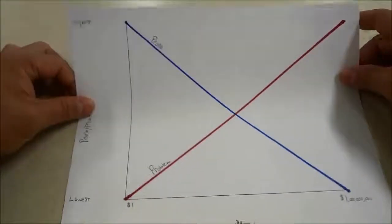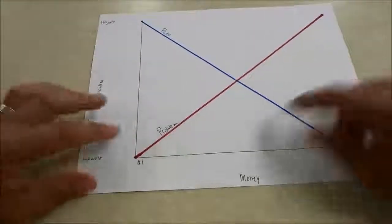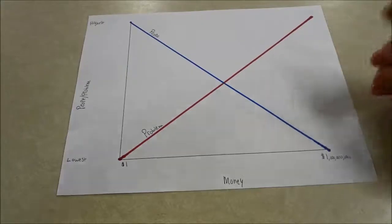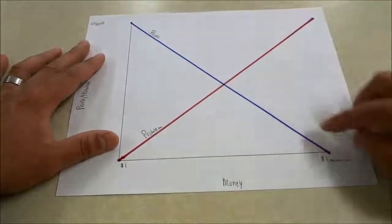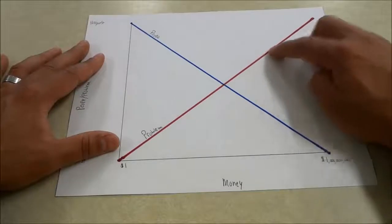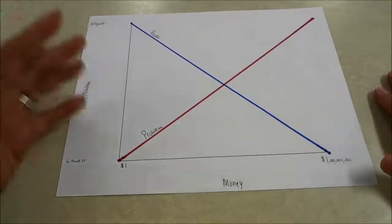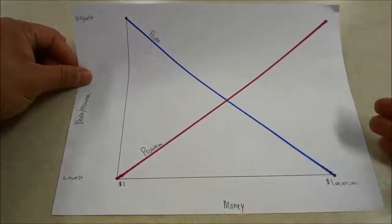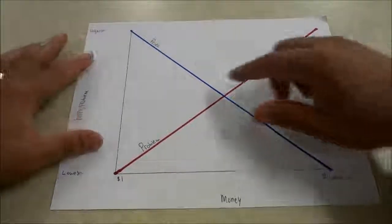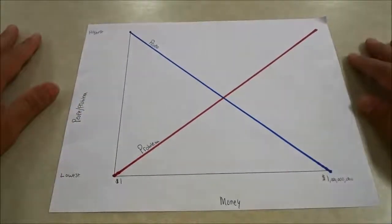This is basically how income works. The people and problem line has lowest and highest, and the money line goes from one dollar to one billion dollars. If you want to earn more income, find a job or opportunity where fewer people are willing or able to do it and the problem is harder than average to solve. I've used this simple people and problem chart to demonstrate how income works and how people and problem have an inverse relationship. That's all I have for you today — thanks for watching.